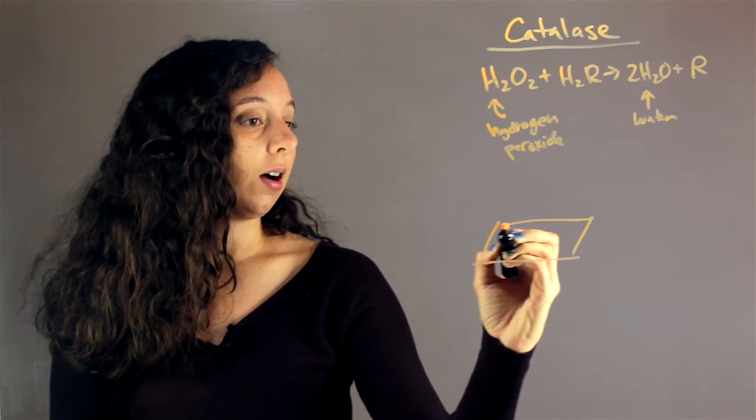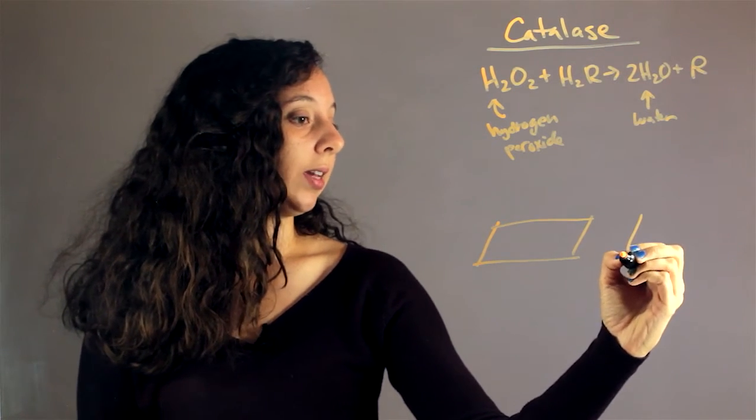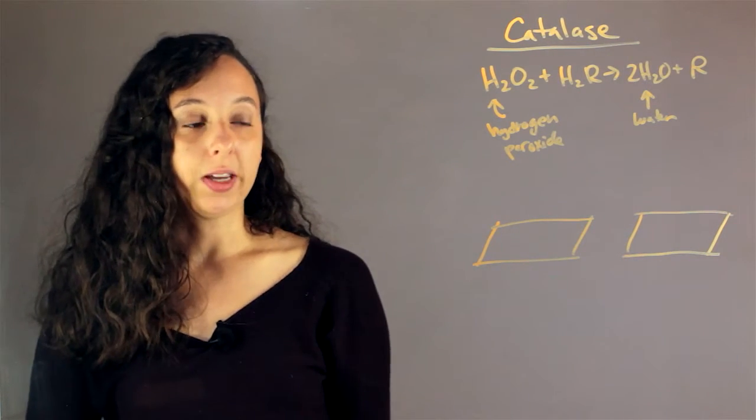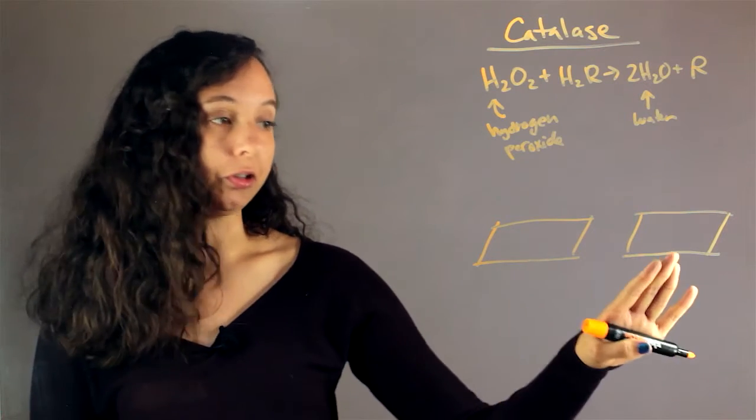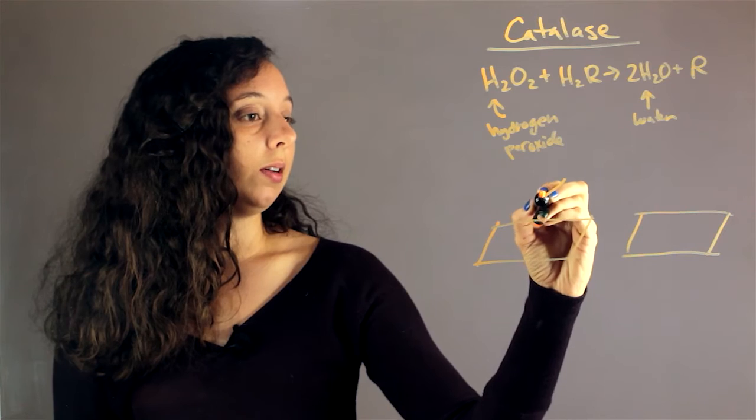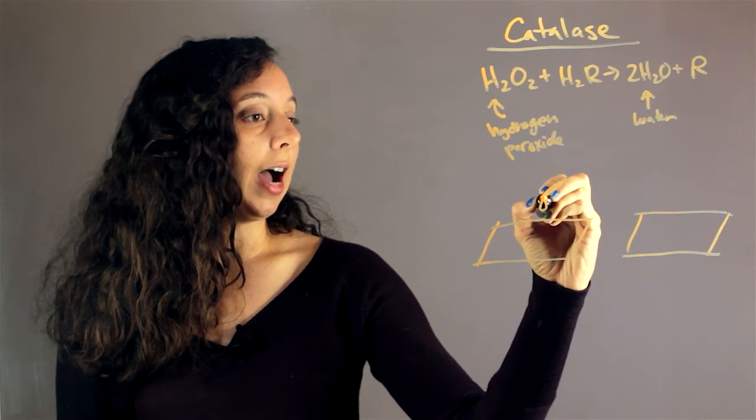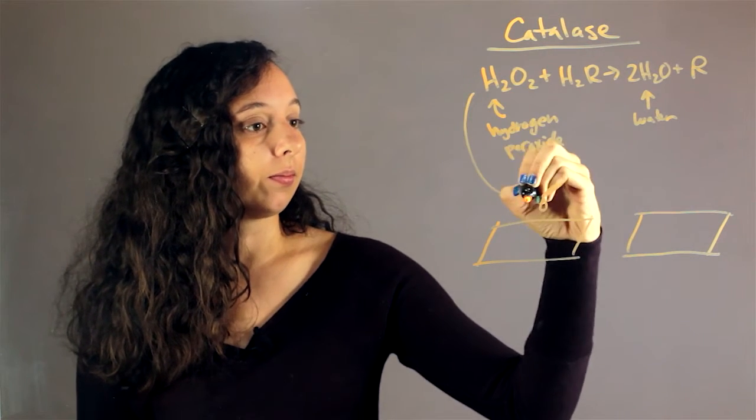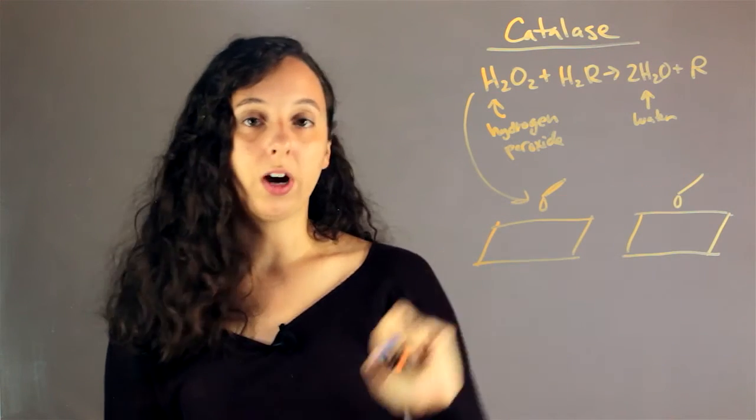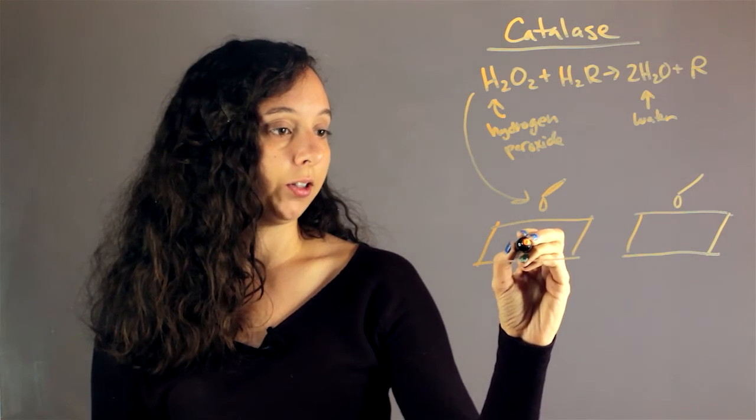So the way that our catalase test takes place is actually on microscope slides. Of course, we can't see our bacteria, so there's nothing there. What you do is you take a drop of hydrogen peroxide, one drop only, and let it fall onto your microscope slide.